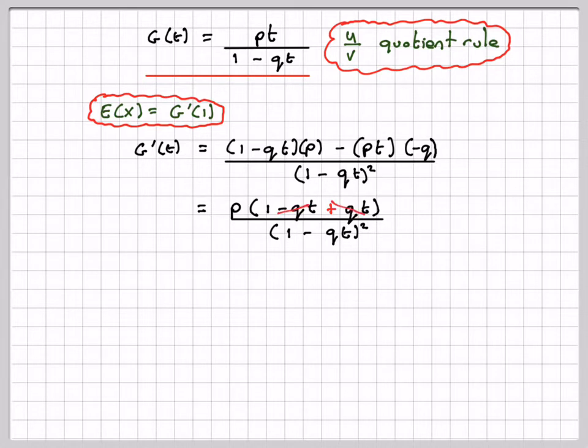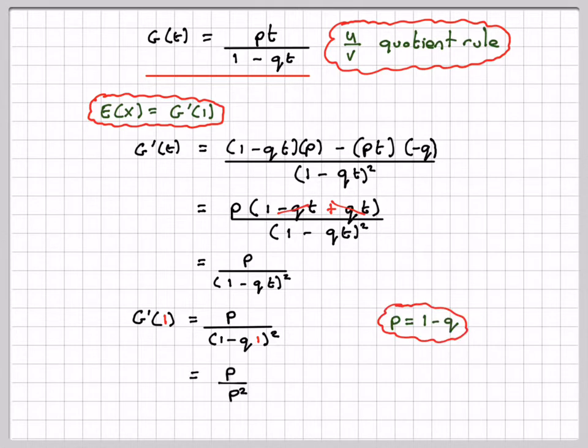This will disappear, and therefore we've got p over (1-qt)². G'(1) will be p over (1-q)², so p will be 1 minus q, which gives me now p over p², which is 1 over p, which is what we expect for the mean of a geometric distribution.